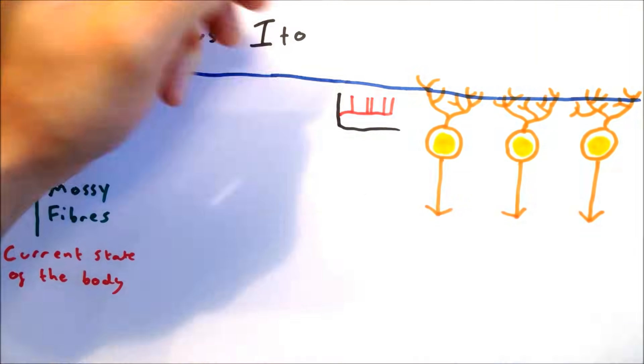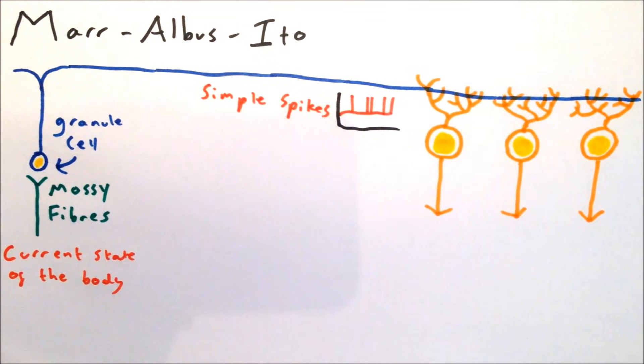They stimulate Purkinje cells relatively continuously, causing them to fire simple spikes to the deep nuclei, which in turn project to the cortex and modulate the current movement.